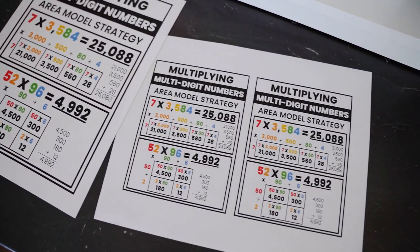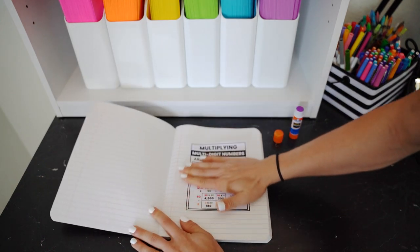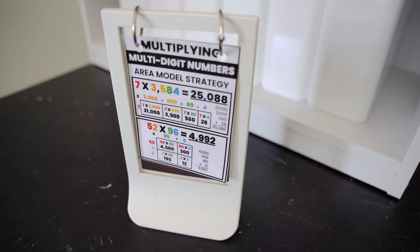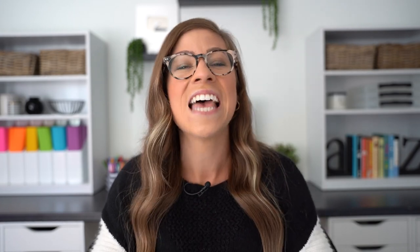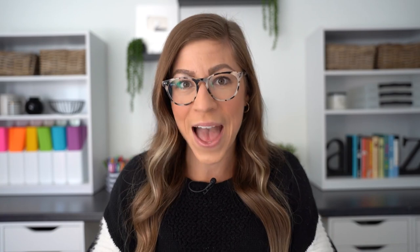My favorite way to use these little mini anchor charts is — number one — you can have students glue them in their notebook. It fits perfectly in a composition notebook or even a spiral notebook, and it becomes their own anchor chart or their own version of notes that they can reference during lessons and also take home for homework. Another way you can utilize mini anchor charts is by creating a mini anchor chart display for each group, or even at your small group table, using Ikea picture frames. These picture frames are super cheap — last time I checked they were like 99 cents. You take out the plastic piece from the middle, hole punch the anchor chart, and hang it using book rings off the top. As you add anchor charts you can flip through them.